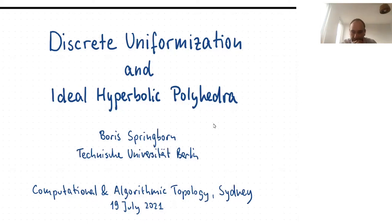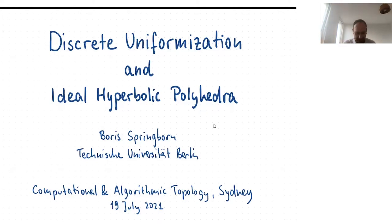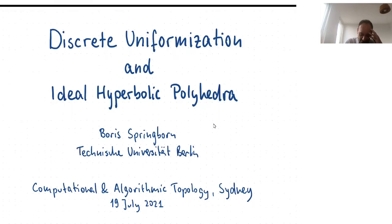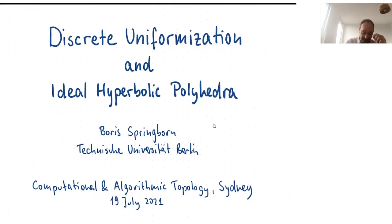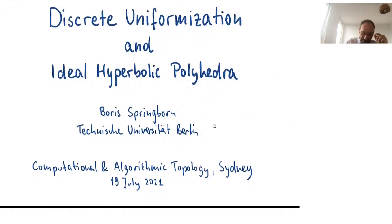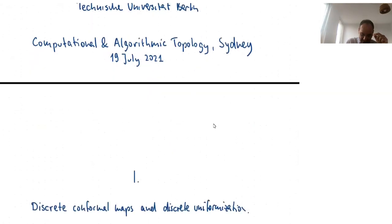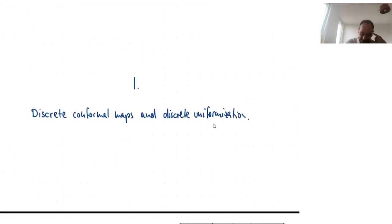Welcome back to the second hour of our program at CATS. We're delighted to have Bo Springborn, who will tell us about discrete uniformization and ideal hyperbolic polyhedra. I'll try to explain in some detail how two different subjects are connected: discrete uniformization and the geometry of ideal hyperbolic polyhedra. 'Ideal' doesn't mean they're very good, but that they have their vertices at the boundary of hyperbolic space. Let's start with part one about discrete conformal maps and discrete uniformization.